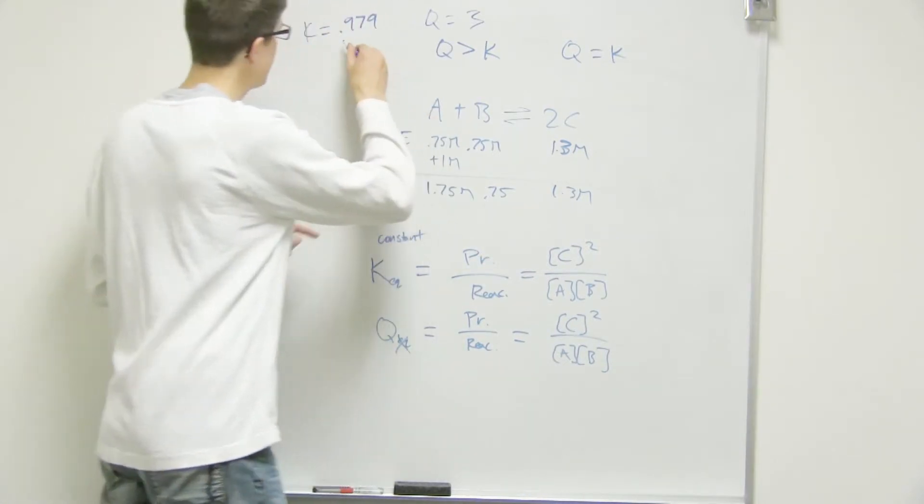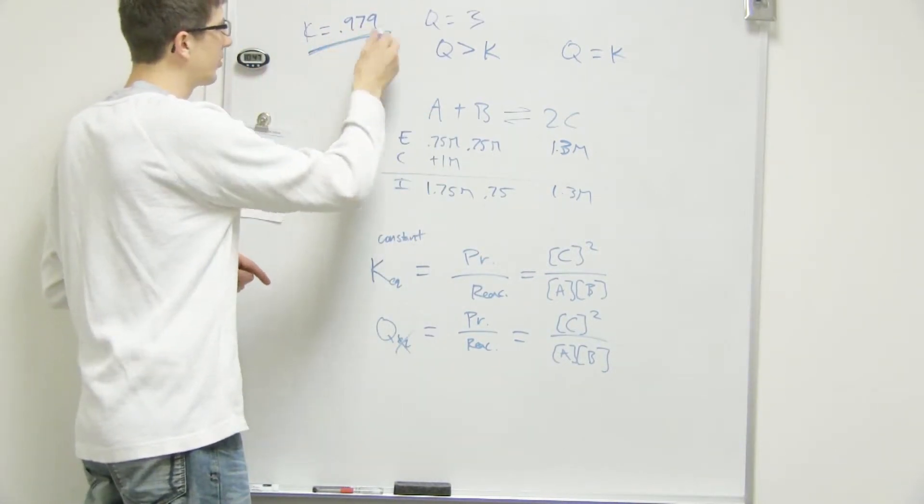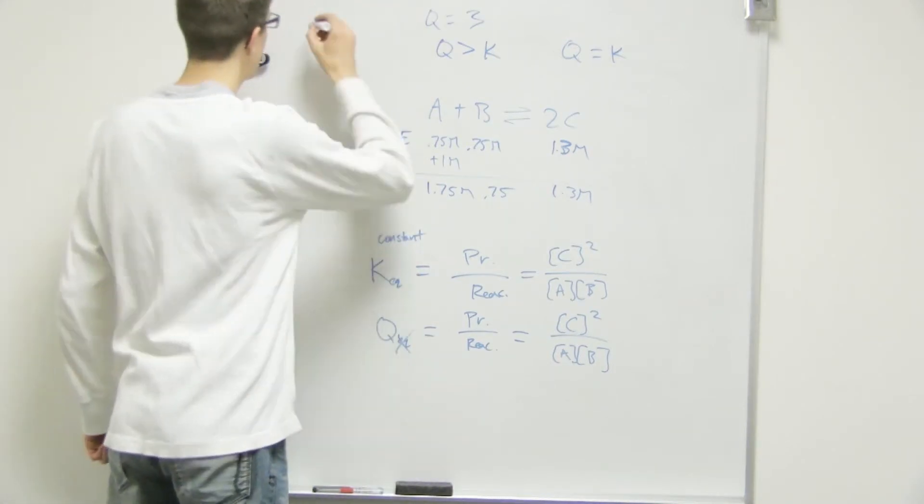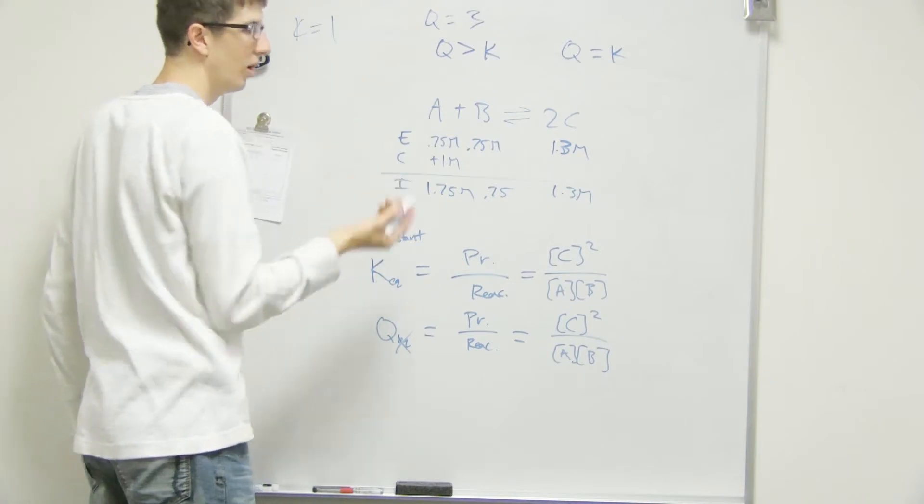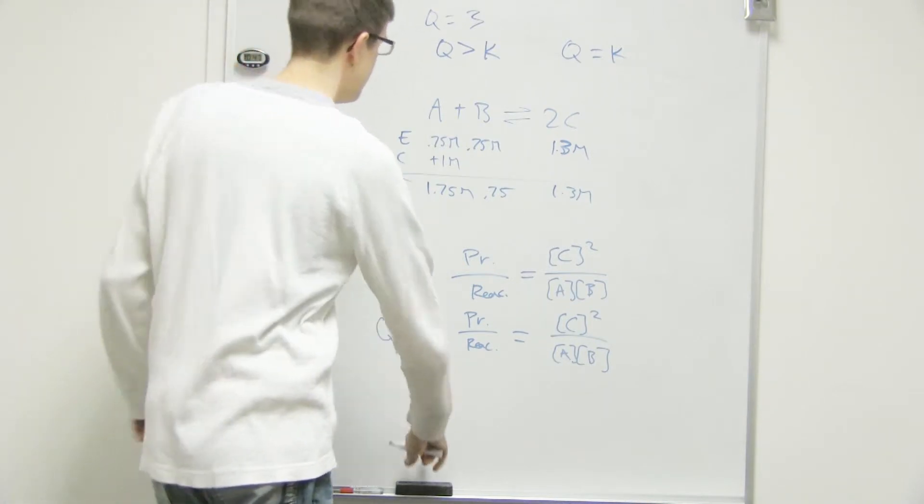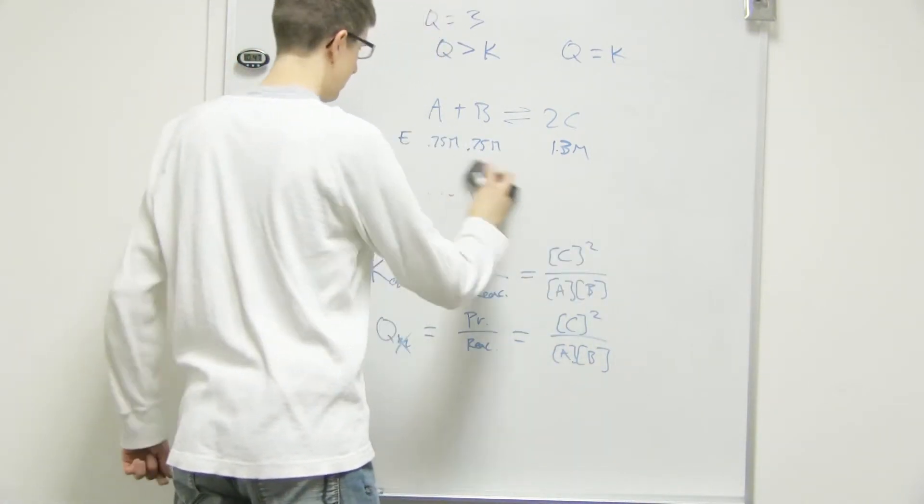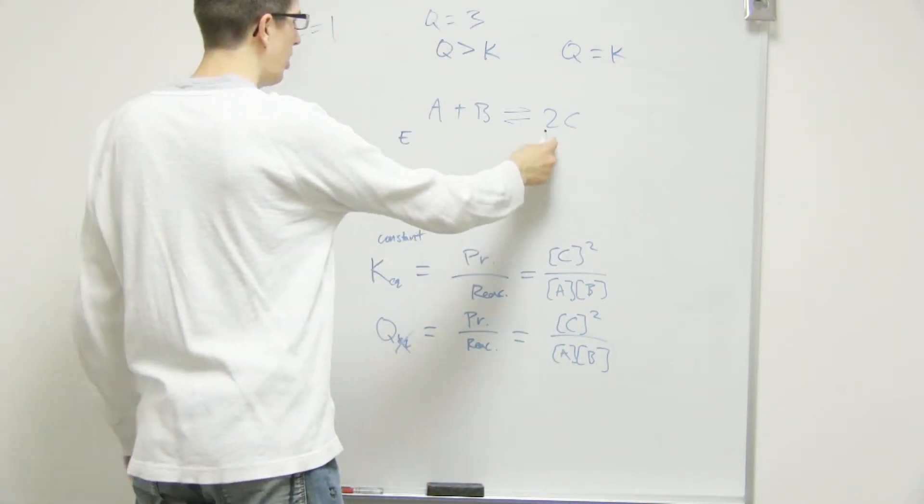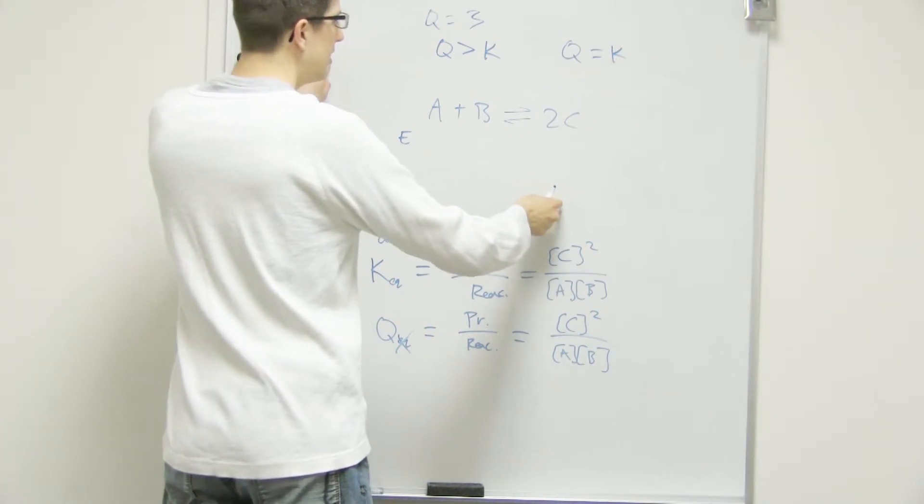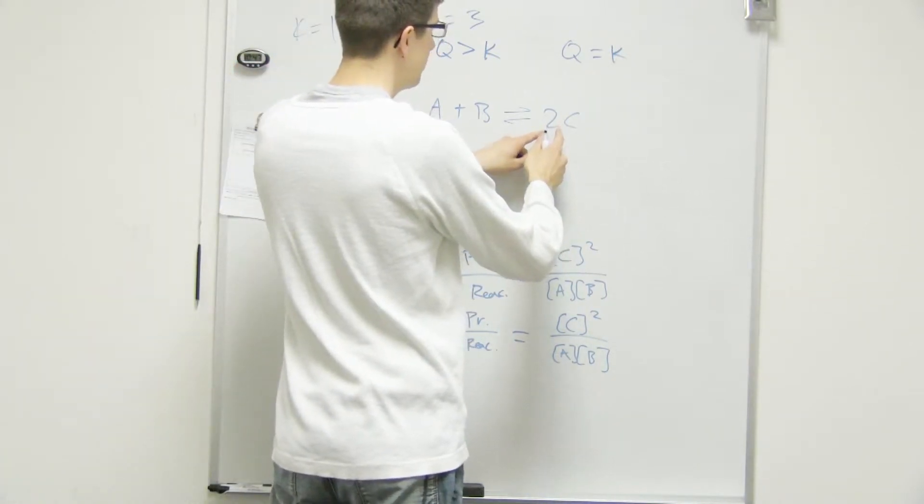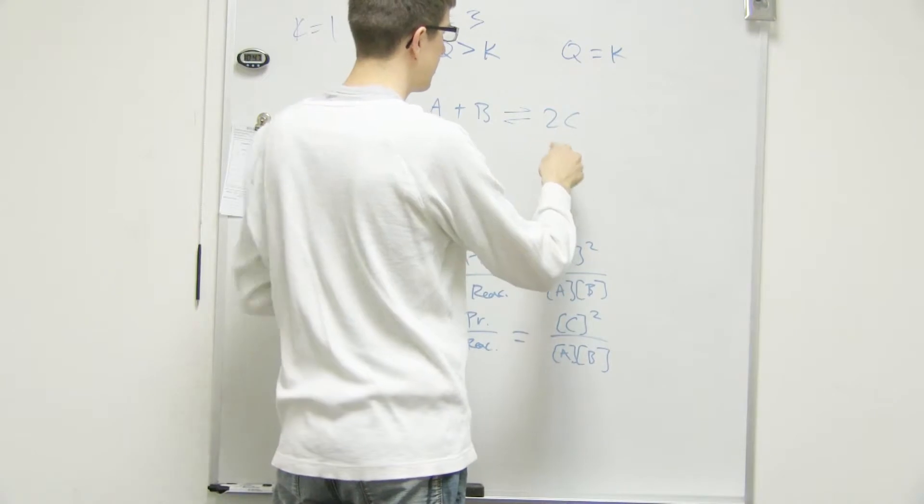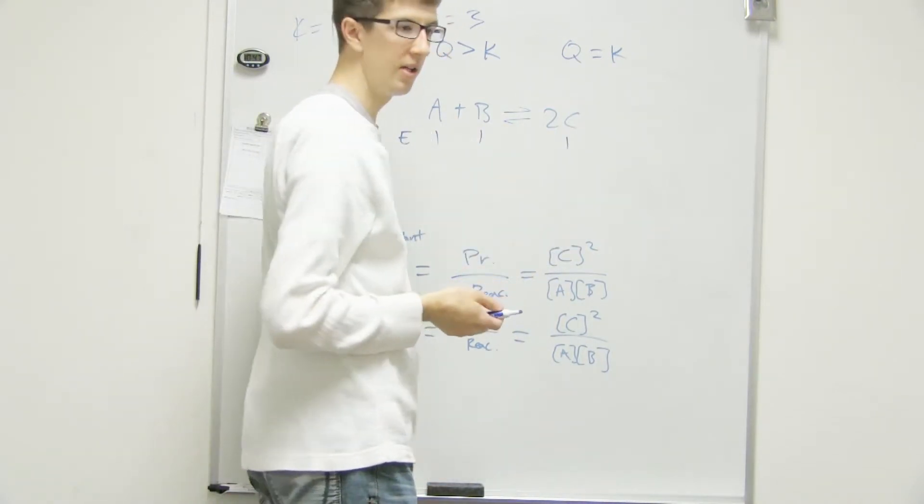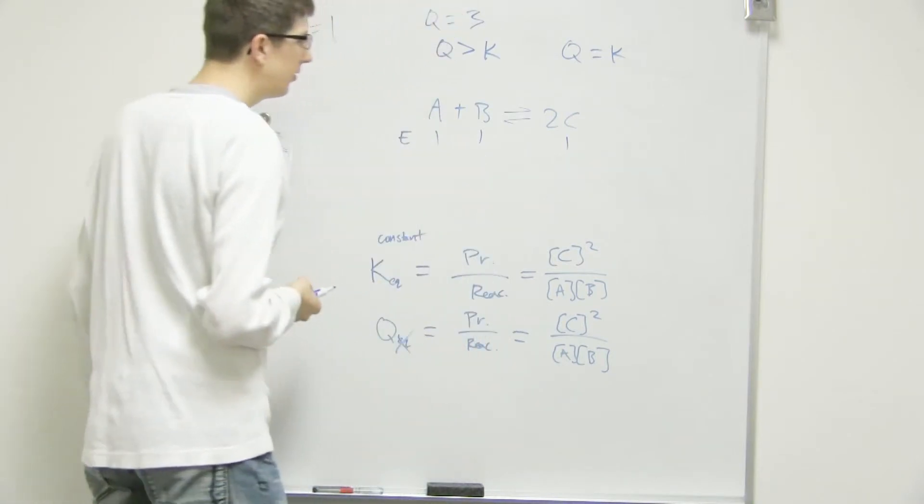So in this case, we're saying that K is equal to this, right? Let's actually make it even simpler and just say K equals 1, right? So that means whenever we get to an equilibrium, let's change our numbers up. No matter what, this products over reactants will give us 1, right? So if we have 2C, I guess we could just make everything 1, right? That will make everything 1. 1 squared over 1 times 1. So that's 1.